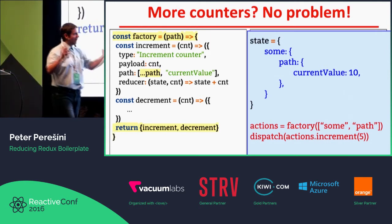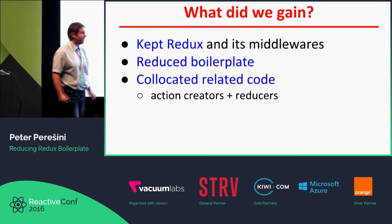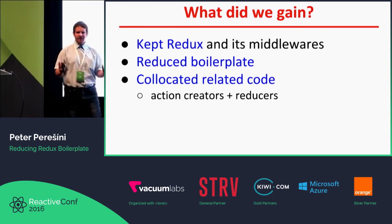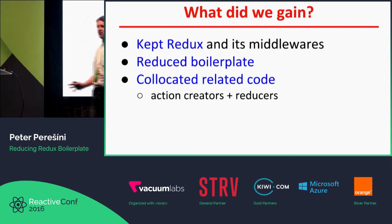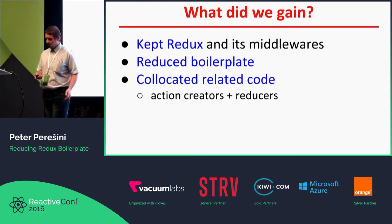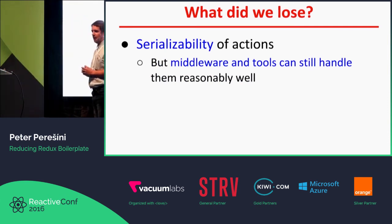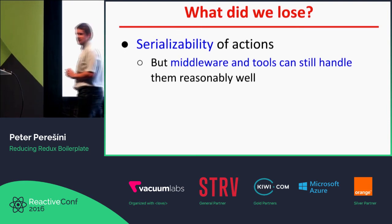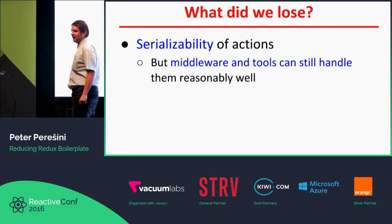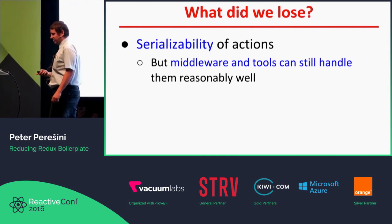So that's the whole idea I was trying to present today. What did we gain? First, we kept Redux and all of its middlewares. Second, we reduced a lot of boilerplate inherent to Redux. Most importantly, we collocated the code that was spread across actions and reducers but logically belongs to a single entity. Of course we did lose something — we lost the serializability of actions. But this is not such a big deal; most middlewares we use can handle this gracefully, so if you don't really need perfect time travel, you can still attach functions to actions and it works.